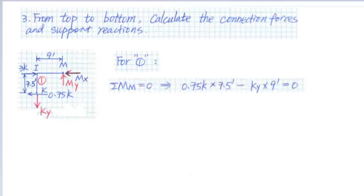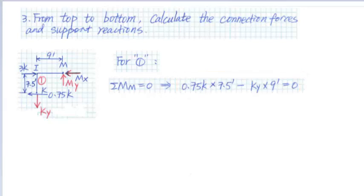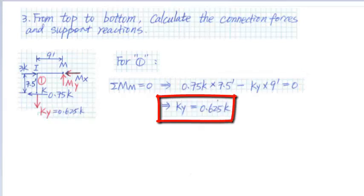Summing the moment at point M and assuming clockwise moment is positive, we get 0.75 kips times the arm of 7.5 feet minus Ky times the arm of 9 feet equals 0. Solving, we get Ky equals 0.625 kips.